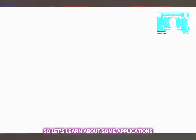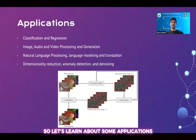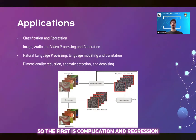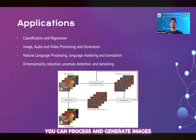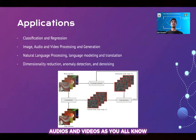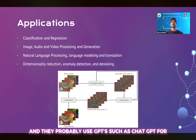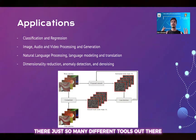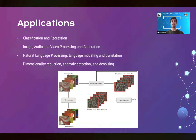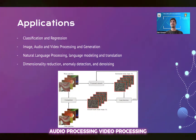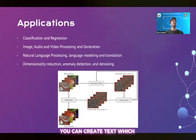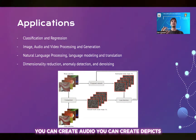So let's learn about some applications. The first is classification and regression — you can classify data and carry out regression on that data. You can process and generate images, audios, and videos. As you know, and have probably used, GPTs such as ChatGPT, or other tools, are used for image processing, audio processing, and video processing. You can create text that mimics that of human beings, you can create audio, and you can create deepfakes — all done by neural networks.